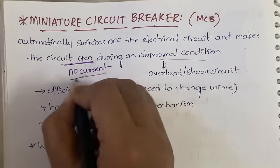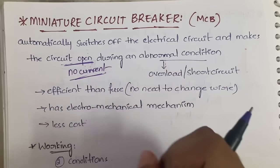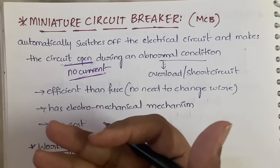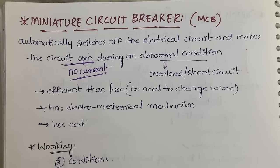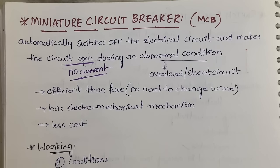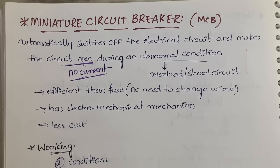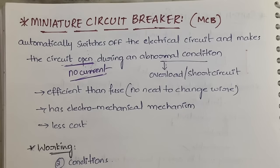Since there is no current flowing, our devices will be protected. If a short circuit or overload has occurred, a high amount of current passes into the circuit. If MCB is not there, that high current will directly reach our load — our devices such as a bulb, fan, refrigerator, AC — and our devices will get damaged.